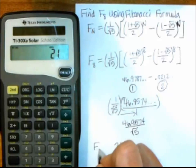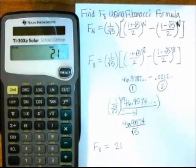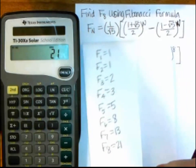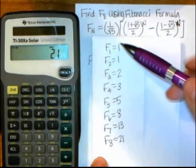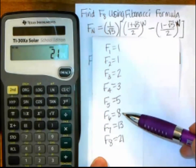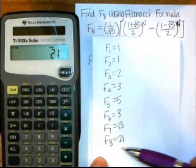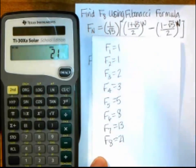So F sub 8 is 21, and here I have a list of the Fibonacci numbers, so you can see 1, 1, 2, 3, 5, 8, 13, 21. So F sub 8 is definitely 21.